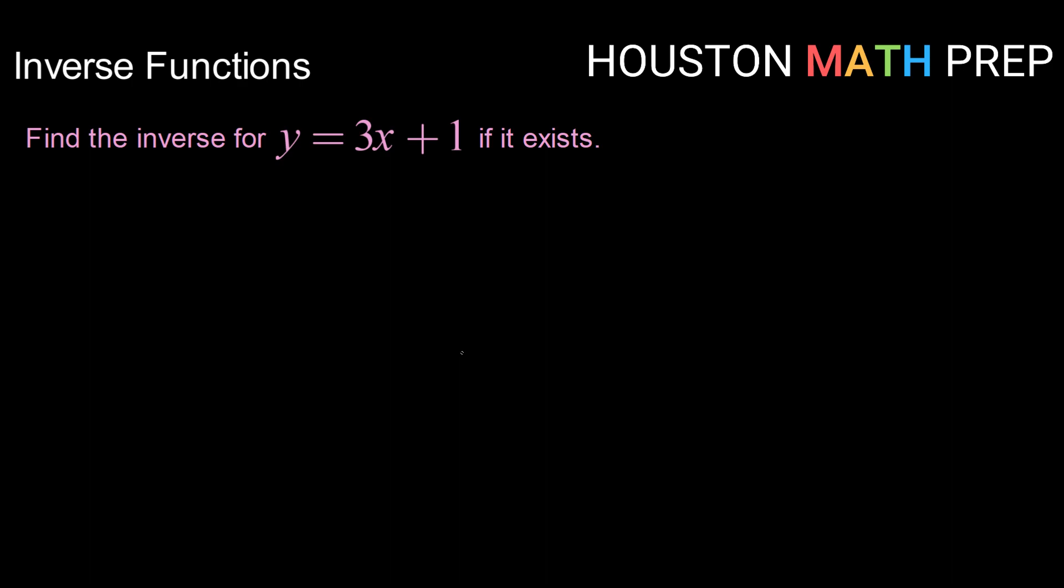So the first thing that we need to do is check really quickly whether or not this function y equals 3x plus 1 is one-to-one. So drawing a quick graph, this is a line mx plus b.